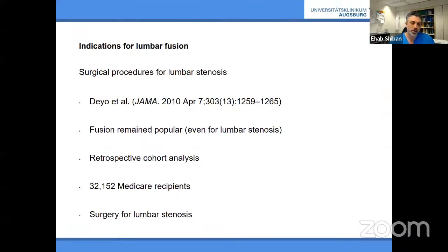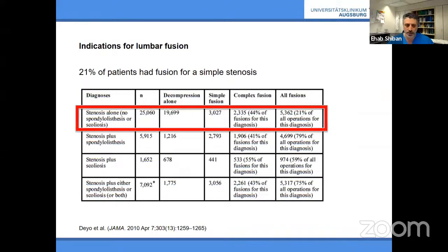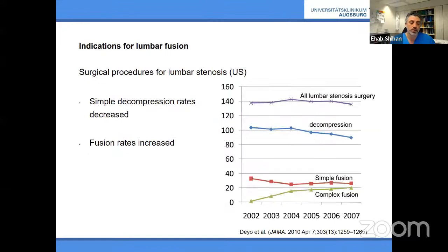This is remarkable when you look at a JAMA 2010 article examining a very large cohort of Medicare recipients in the US who had only lumbar stenosis. Even for stenosis alone, 20% had fusion surgery. Despite existing data suggesting instrumentation was unnecessary, many still received complex instrumented surgery — and the number of such fusion surgeries was also increasing over the years.